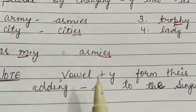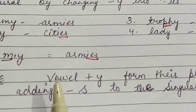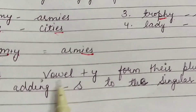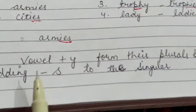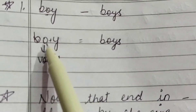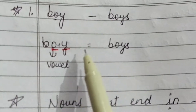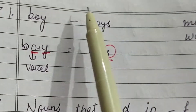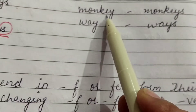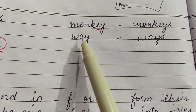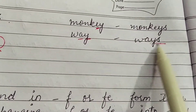Remember one more thing: any singular noun that ends with a vowel plus -y forms its plural by simply adding -s. For example, boy — o is a vowel and y, so boy → boys. Monkey — vowel + y → monkeys. Valley — vowel + y → valleys, by adding -s.